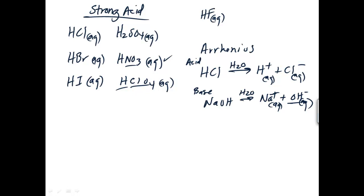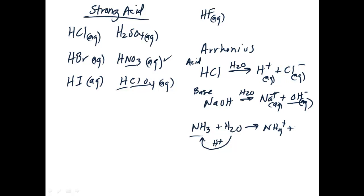The problem is that Arrhenius theory doesn't work well for something like ammonia. Ammonia is a base, but there are no hydroxide ions attached to it. When we put ammonia in water, a hydrogen ion from the water attaches to the ammonia to form the ammonium ion, and what's left of the water is the hydroxide ion. So now we've generated a hydroxide ion and have a basic solution — even though the hydroxide wasn't present initially in the substance.